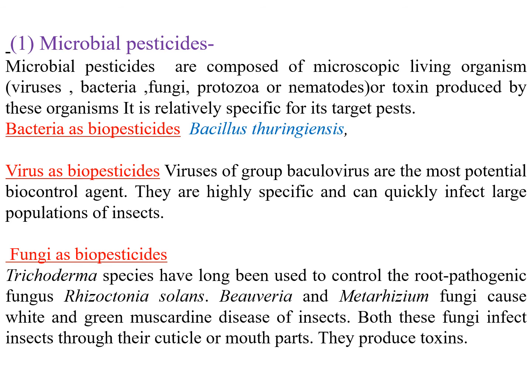First, microbial pesticides. Microbes are small microscopic organisms. Microbial pesticides are composed of microscopic living organisms like viruses, bacteria, fungi, protozoa, or nematodes, and also toxins produced by these organisms. They are relatively specific for their target pest. Microbial pesticides are further classified into bacteria used as biopesticides, viruses as biopesticides, and fungi as biopesticides.